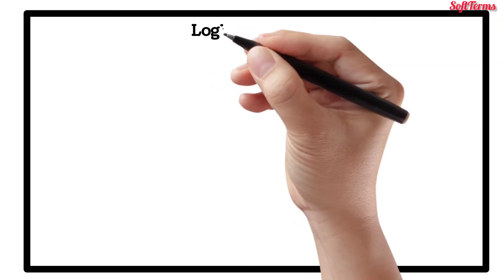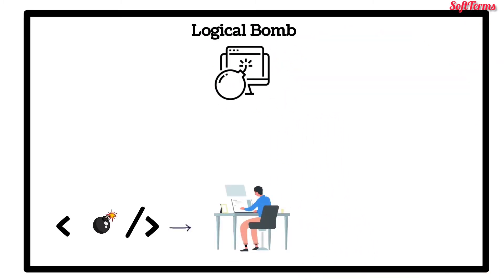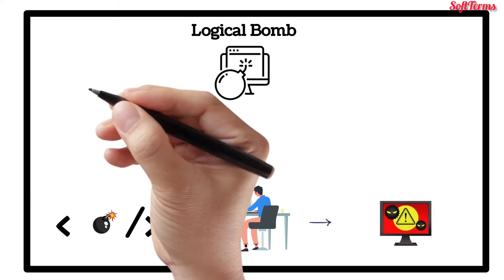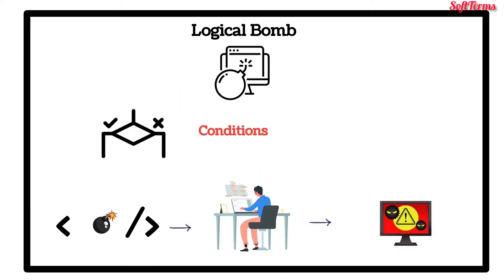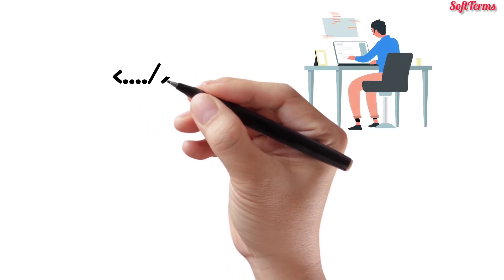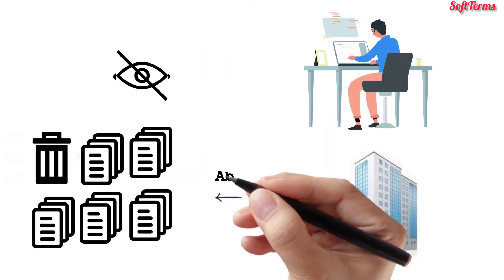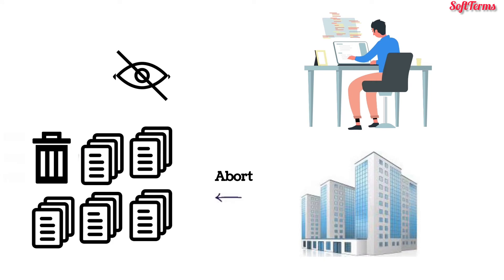A logical bomb is a piece of code intentionally inserted into a software system that will set off a malicious function when specified conditions are met. For example, a programmer may hide a piece of code that starts deleting files should they ever be terminated from the company.